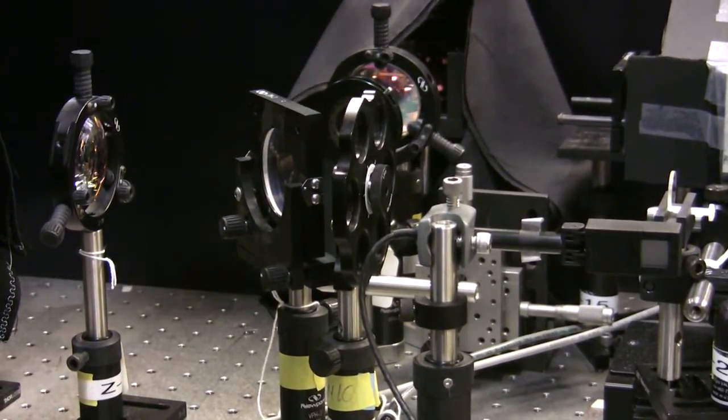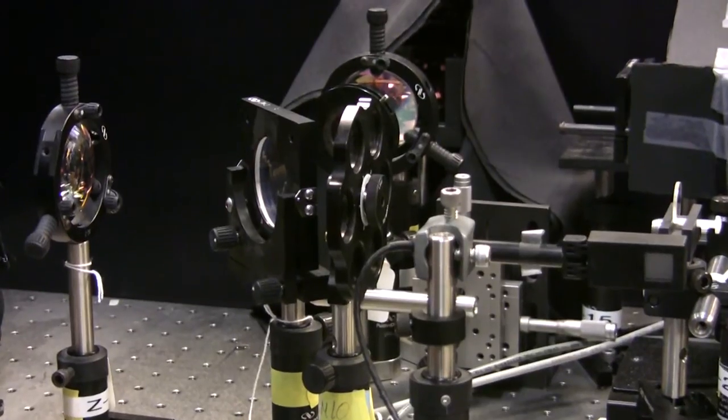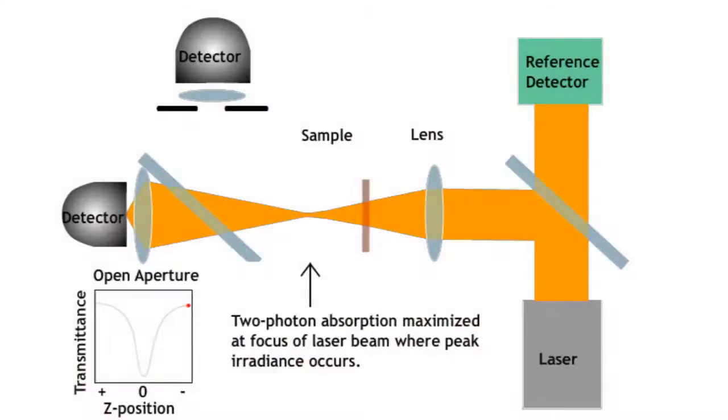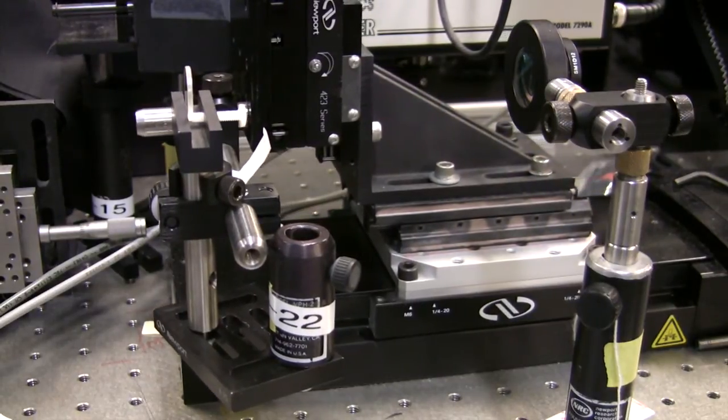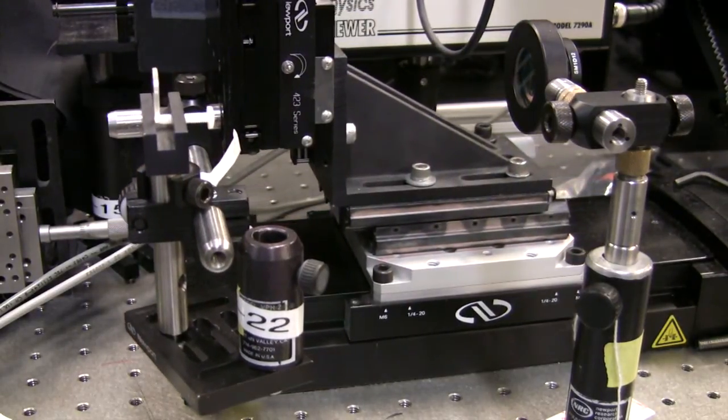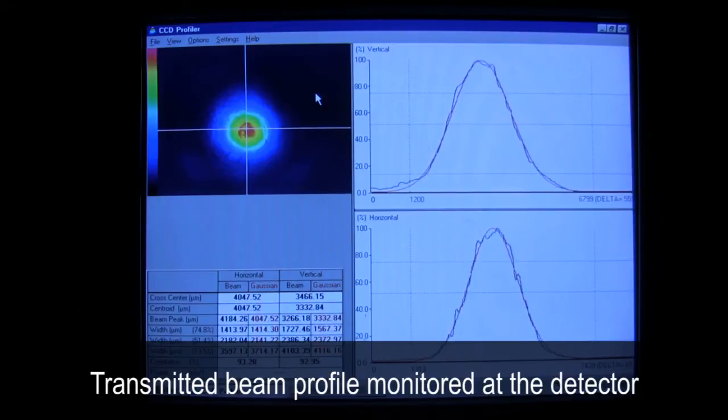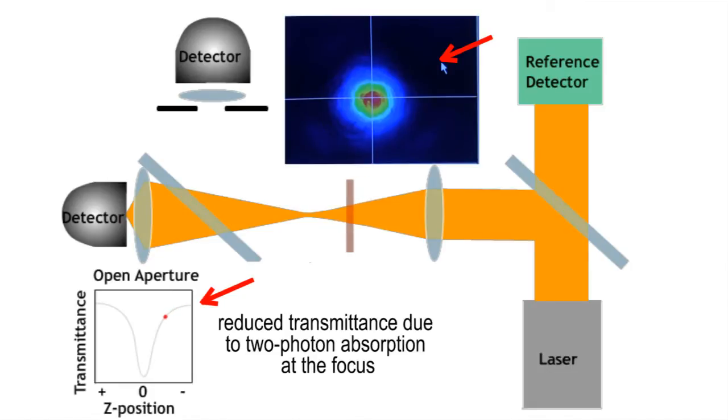So to try and explain how this works, it's a little bit easier to start with two-photon absorption. Since two-photon absorption is actually dependent upon the irradiance that you're exciting with, as you actually focus down tighter, your irradiance gets larger. And so your two-photon absorption should also get larger. So what happens is as we move this sample from where it's not focused to where the beam is focused, we should get an increase in nonlinear absorption. And that's what we're going to monitor on the open aperture.